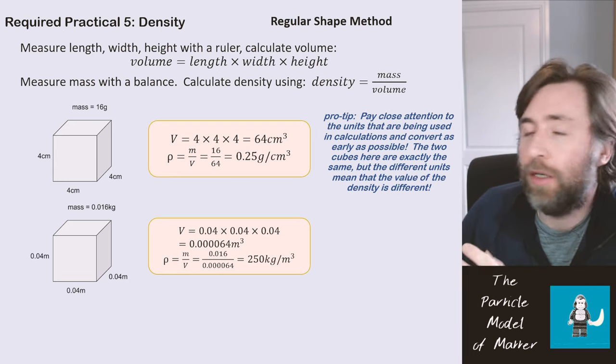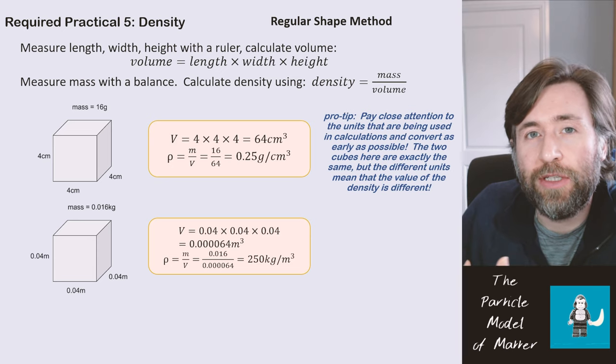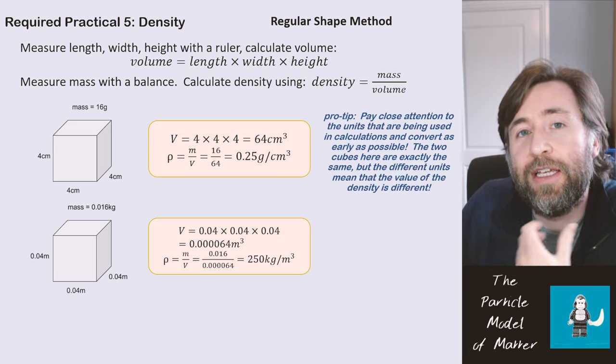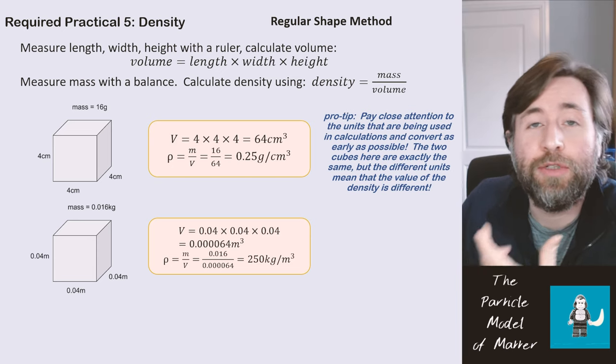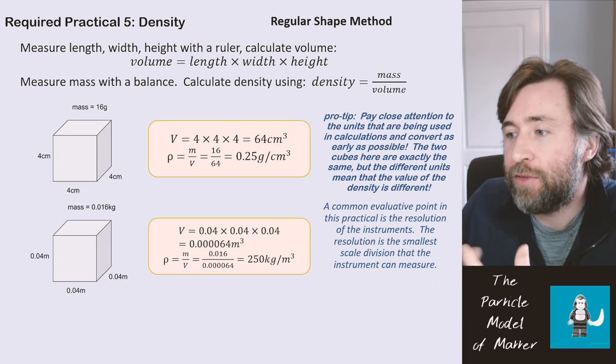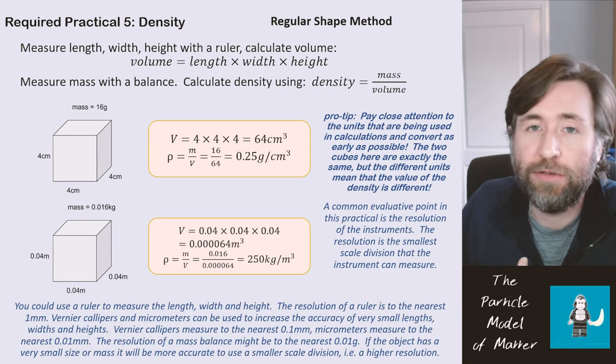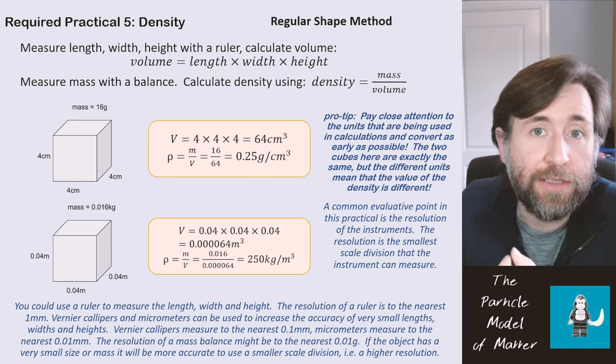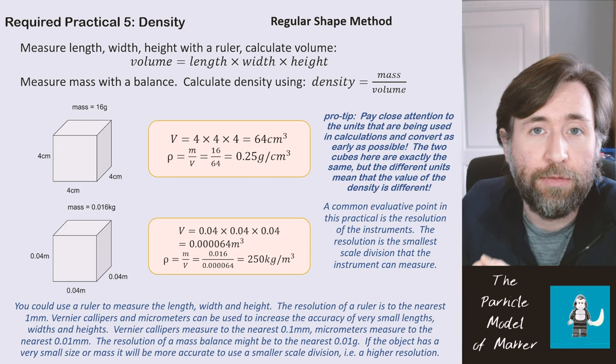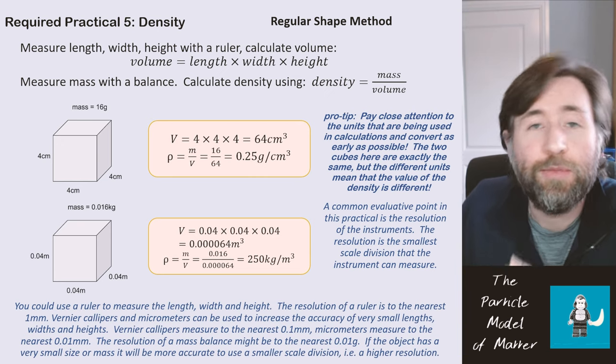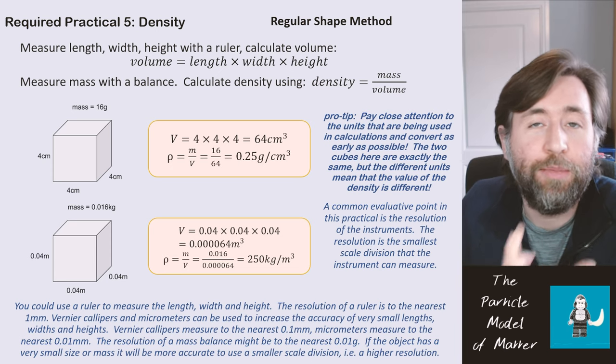A common evaluative point in this practical is the resolution of the instrument. So you're using a ruler, and the resolution of a ruler is one millimeter. That's what we mean by the resolution of the instrument. It's the smallest division that can be measured by the ruler. The word resolution means the smallest scale division that can be measured by that instrument.